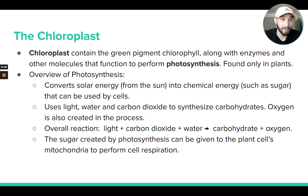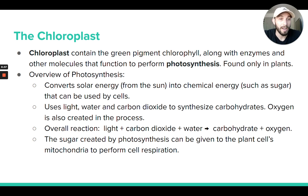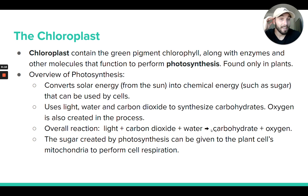In the chloroplast, CO2 and H2O are used to build carbohydrates like glucose (C6H12O6), and oxygen gas is also produced as a byproduct. The reactants are carbon dioxide, water, and light energy; the products are carbohydrates and oxygen — or simply put, sugar and oxygen.